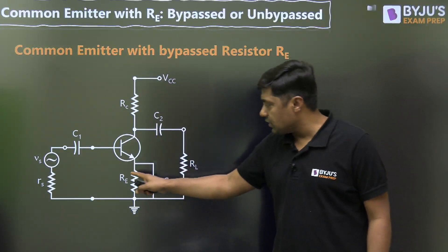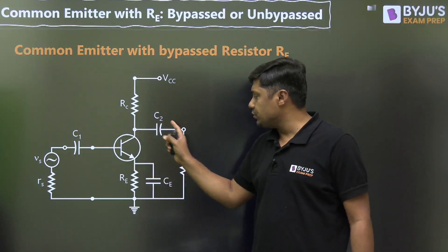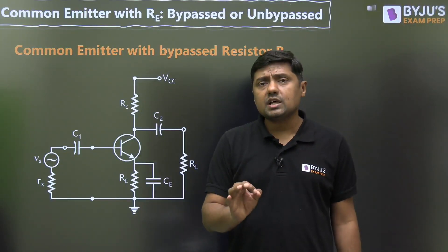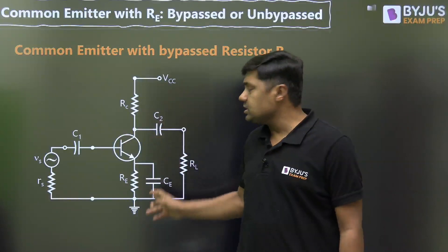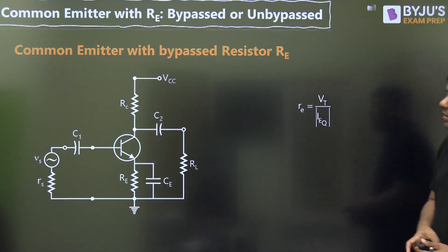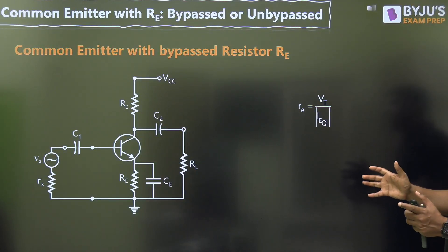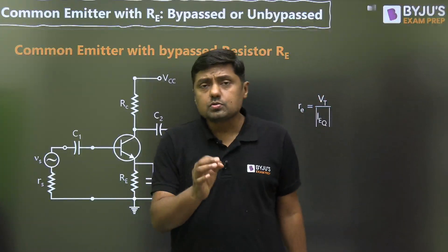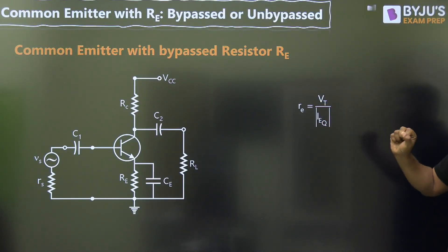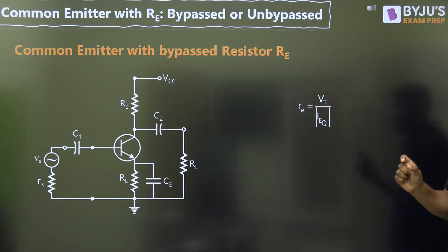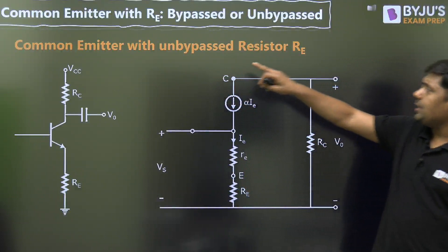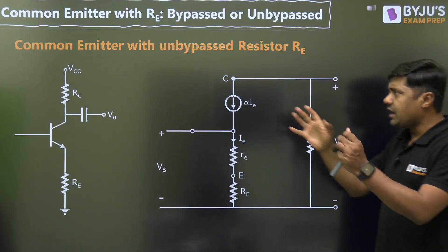The capacitor will short circuit RE. The values of CC1, CC2, and CE are very, very large. Remember: capacitors act as open circuits during DC analysis, and all capacitors act as short circuits during AC analysis. To solve a question based on common emitter with RE for AC analysis, first we have to find small re, which is given by VT divided by IEQ, where VT is the volt equivalent of temperature and IEQ is the DC biasing emitter current.